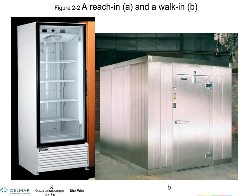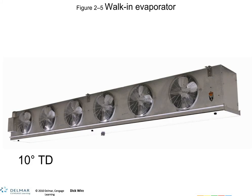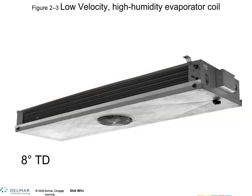Then we have reach-in and walk-in coolers and freezers. Here's an example of a reach-in evaporator coil and fan — rather small, maybe 8 or 10 inches across, to cool a reach-in refrigerator. A walk-in evaporator for a larger walk-in cooler has multiple fans with a large evaporator coil. This would be a low-velocity unit, something you might see in a meat-cutting room where it's not blowing a lot of air. That ends our discussion of evaporators — we'll get into more detail in just a bit.